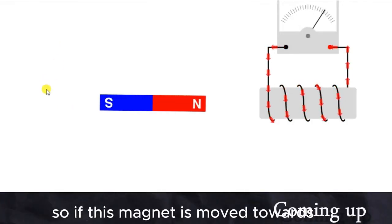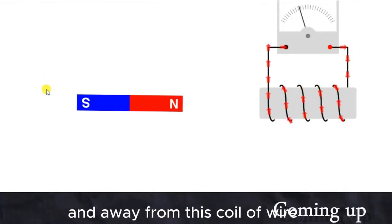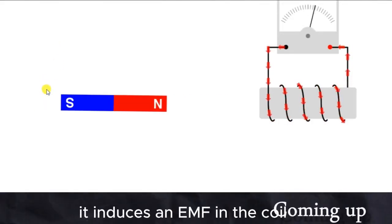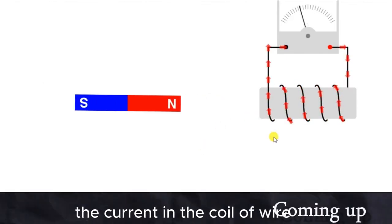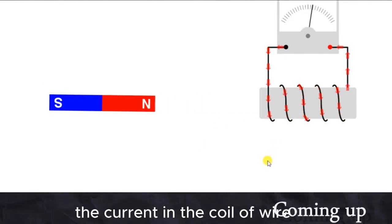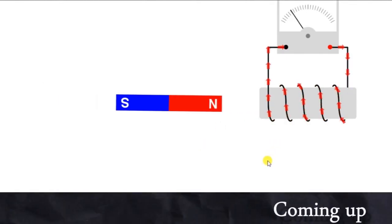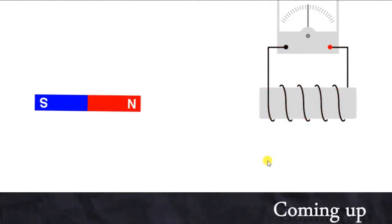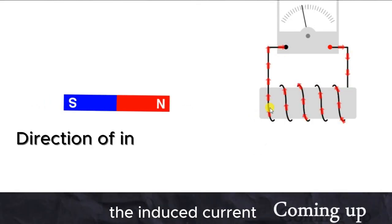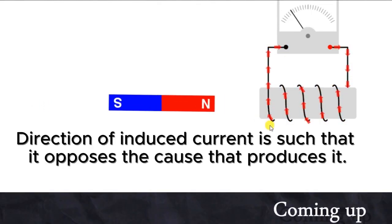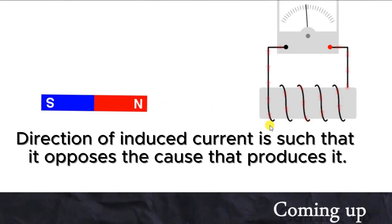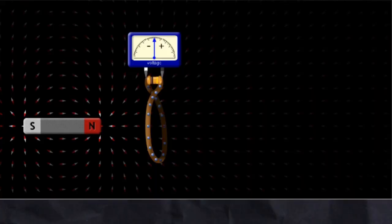If this magnet is moved towards and away from this coil, it induces an EMF in the coil. The current in the coil keeps on changing its direction. The induced current could have a direction such that it opposes the cause.